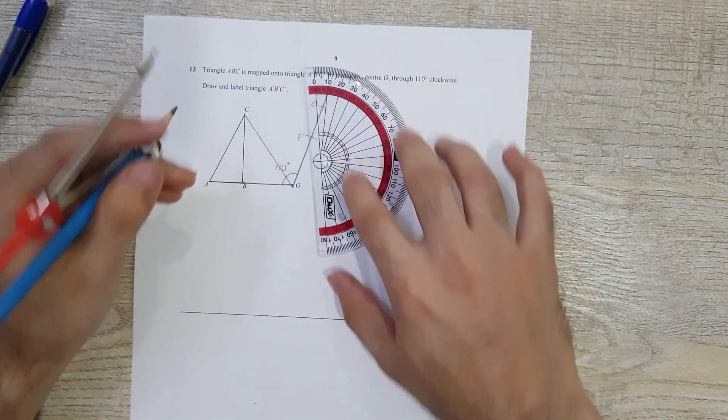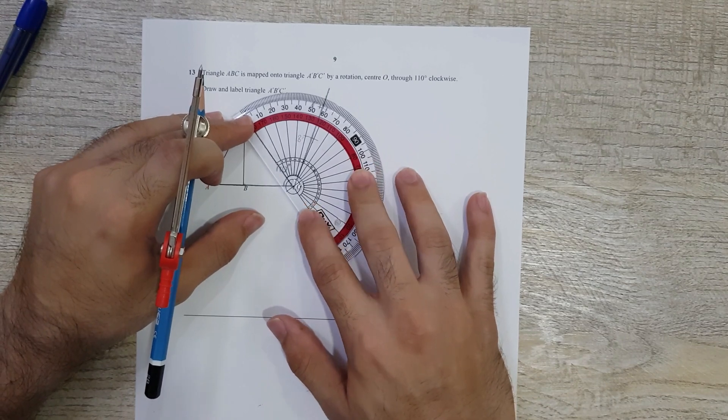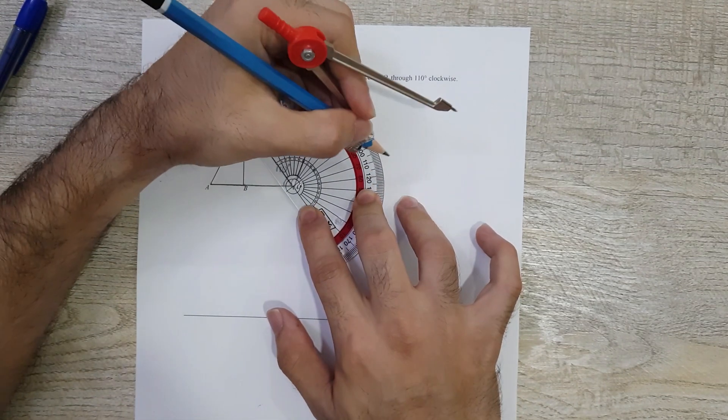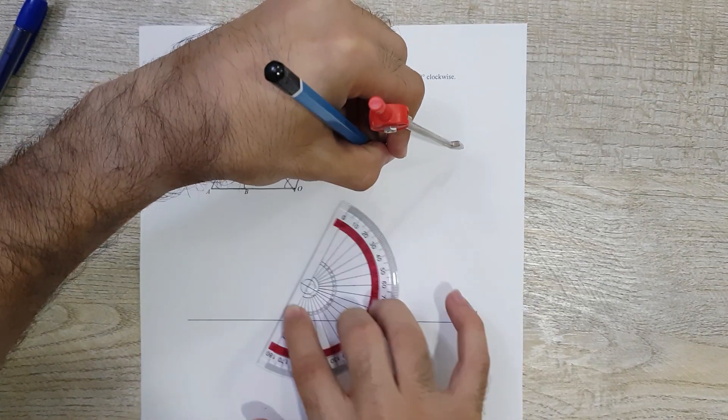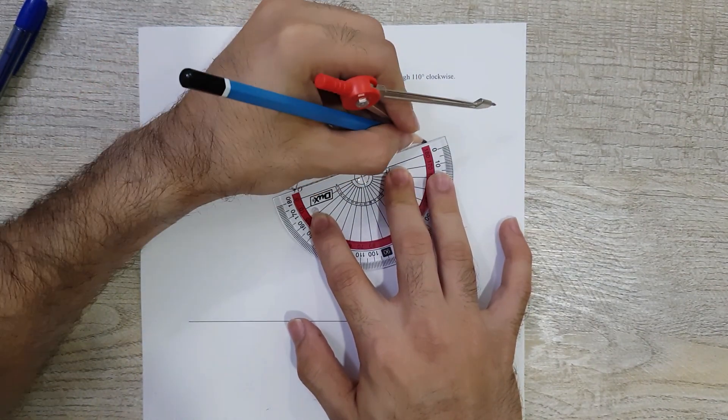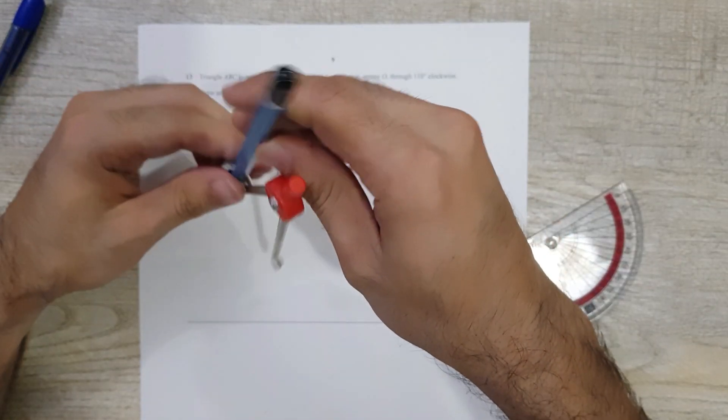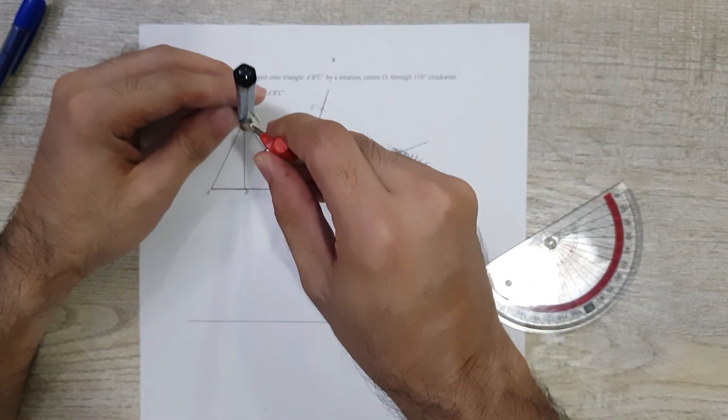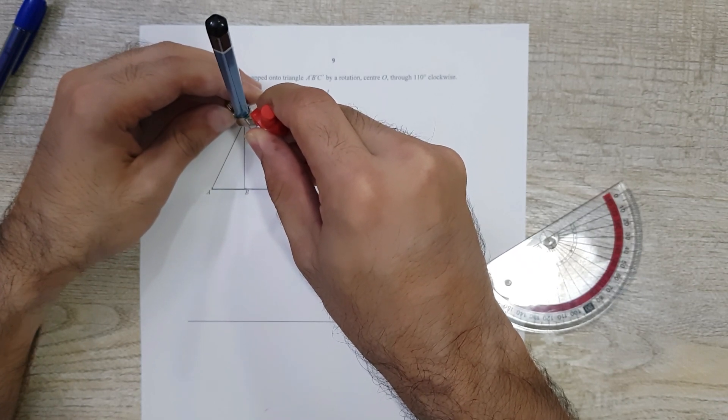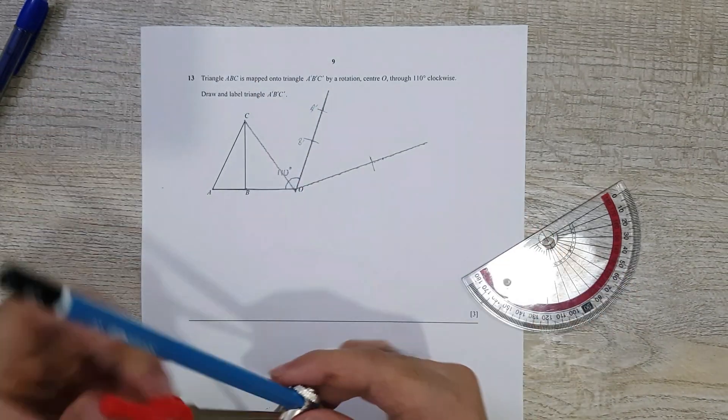I joined this, and then I measured 110 degrees—that's somewhere over here—and then you've got to make a straight line. So somewhere on this line is point C. Now we've got to find out how far it is. Again, we'll do it the exact same way we did with points A and B. This right here is point C'.